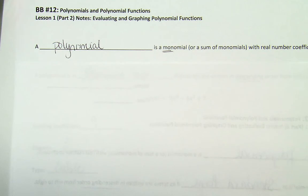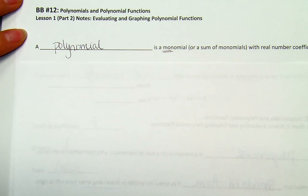The first is a polynomial is a monomial, or a sum of monomials, with real number coefficients. So we talked about, the last time we talked about these notes, we really dove into whether or not a given expression was, in fact, a polynomial. So remember back to Blackboard Assignment number 11.